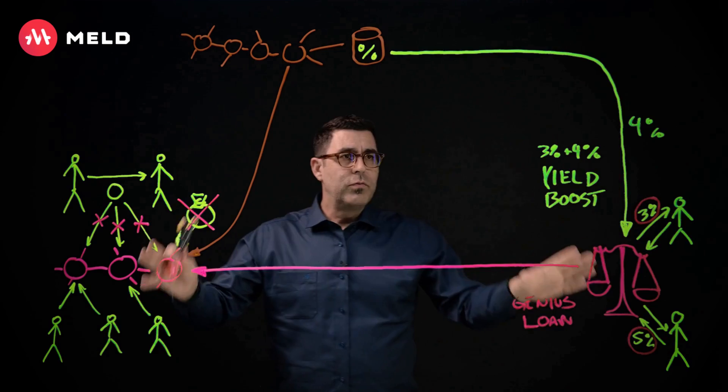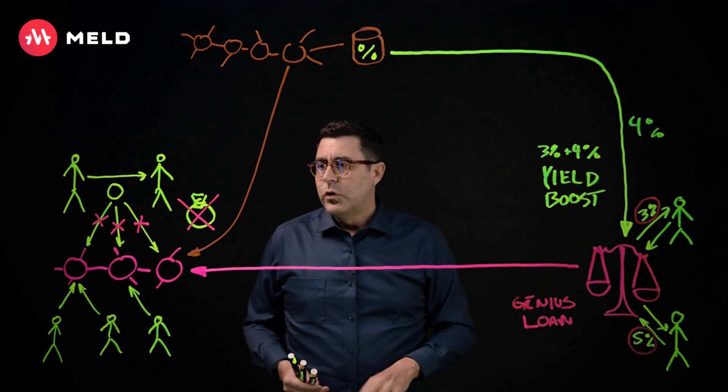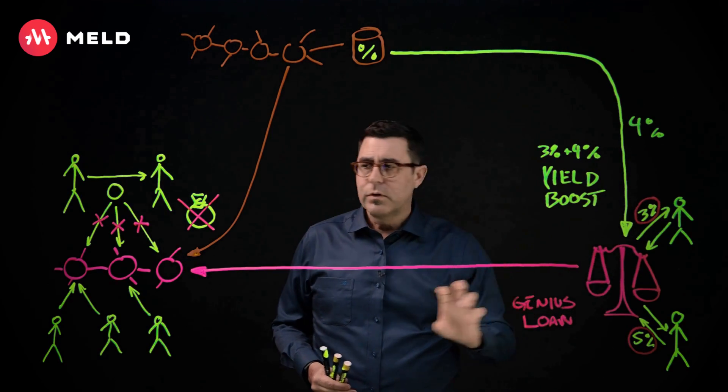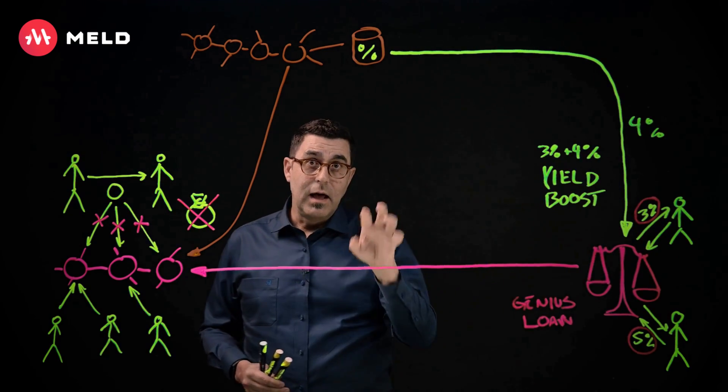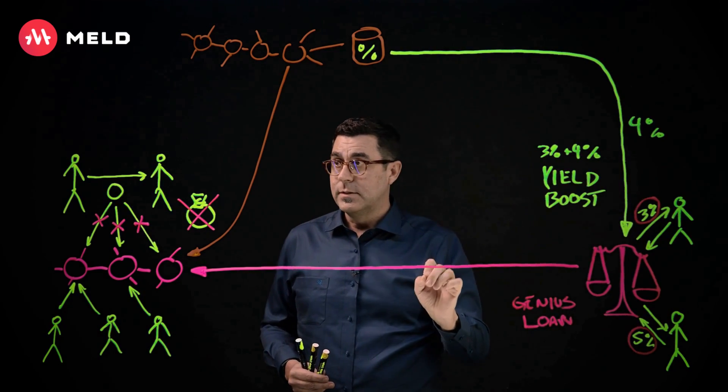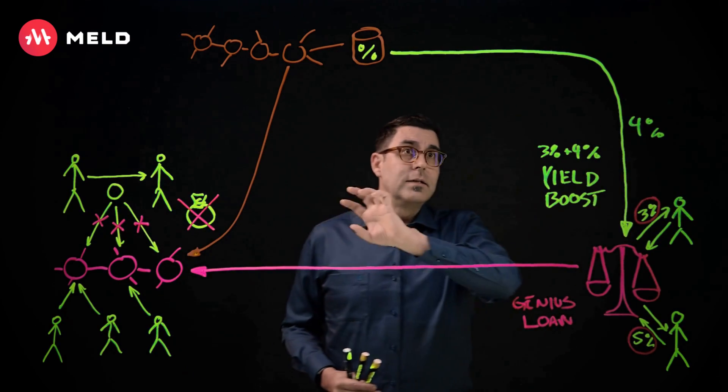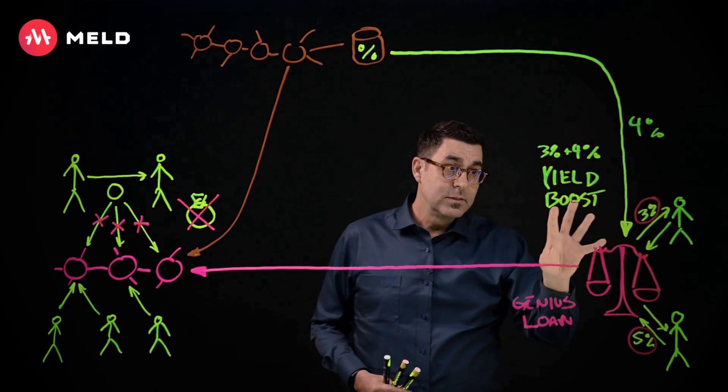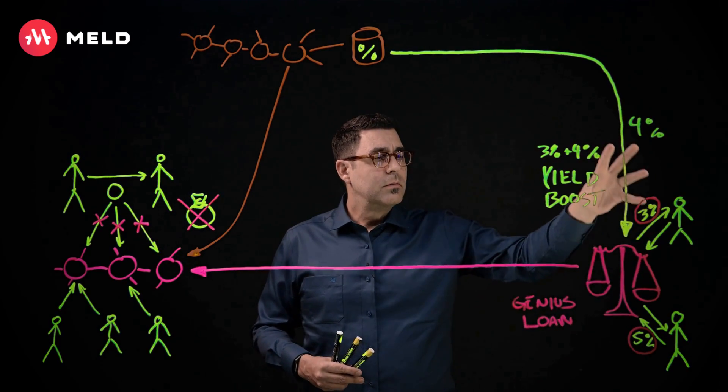So as an overview, MELD is a layer one EVM blockchain, proof of stake. You're able to stake your MELD tokens onto it and generate a yield. Because we have a supplying and borrowing protocol built into the layer one blockchain, we no longer have to worry about gas fees being high to cover the costs. That means everybody using the chain has super cheap transactions. And you're able to bridge your assets from other chains to generate a yield that goes into the supplying and borrowing protocol. And on top of that, you can take out loans that are self-paying.